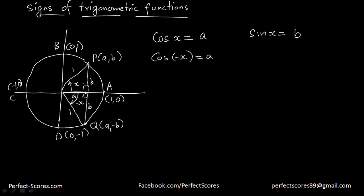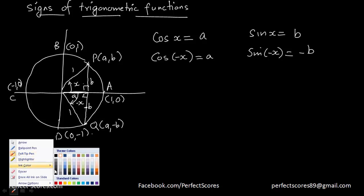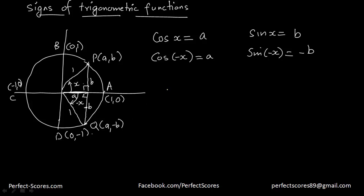The value of sine of negative x is going to be negative b divided by the hypotenuse, which is 1, giving negative b. So we can generalize: cosine of negative x is equal to cosine of x.